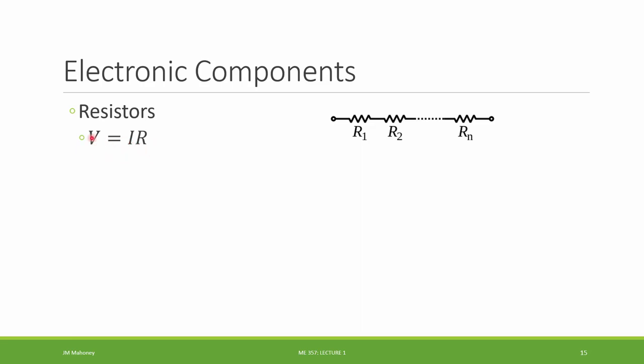The voltage drop across a resistor is the current going through it times the resistance of the resistor. And in SI units, which we'll be using only SI units for our electric components, the resistance will be in Ohms as our base unit.